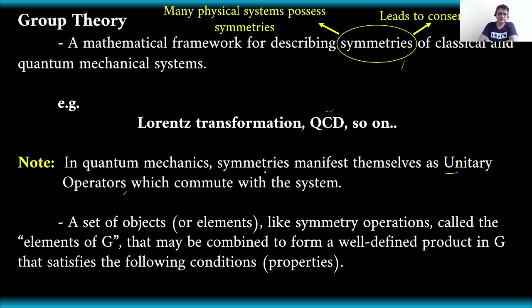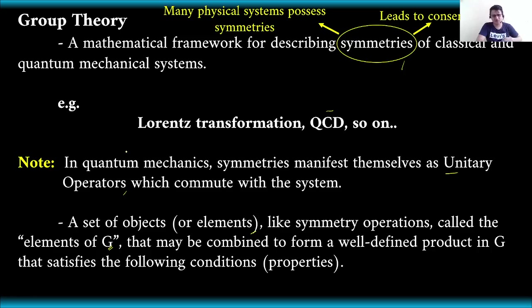Group theory is a set of objects or elements — like symmetry operations — called the elements of G, where we denote our group as G. Just as we can imagine groupings such as group one, group two, and group three, there are members in each group, and those members in group theory are what we call the elements of the group.